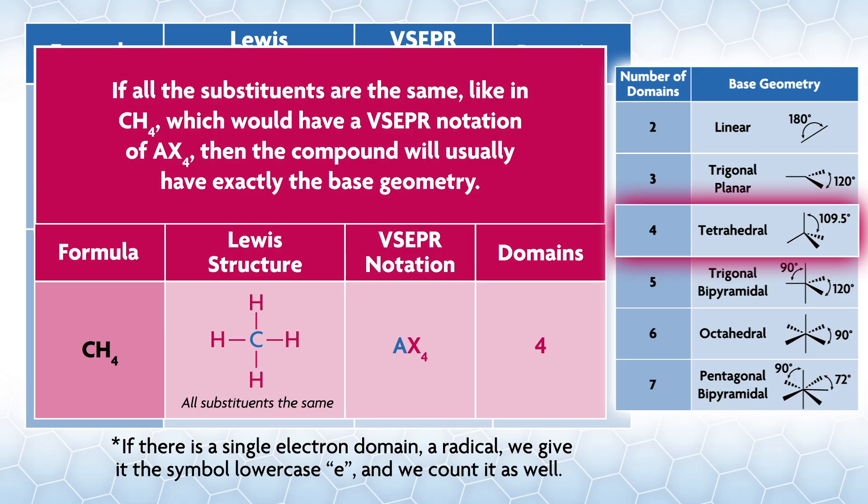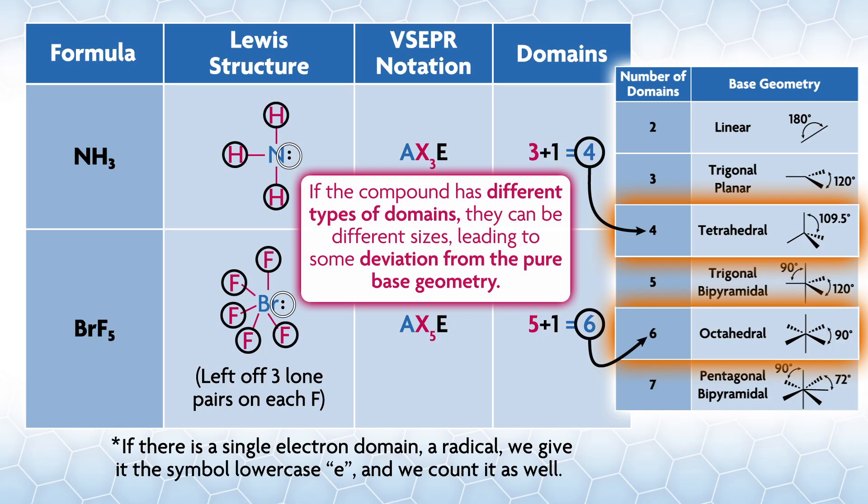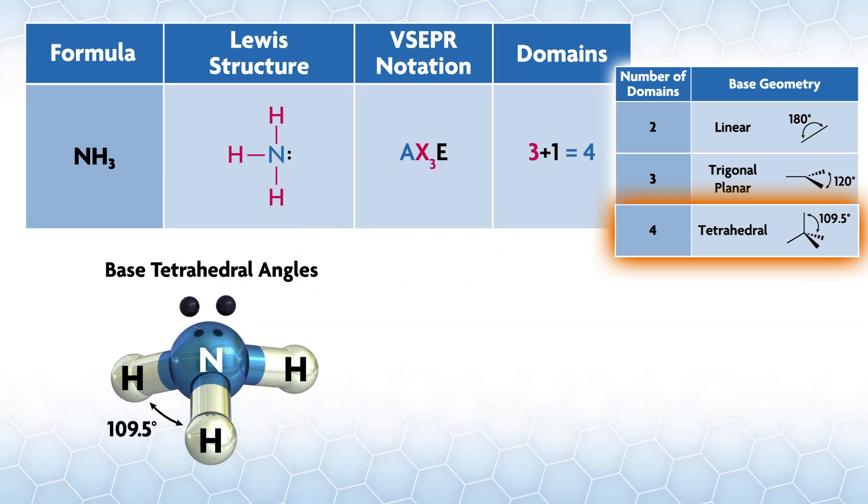Here the base geometries are tabulated for different numbers of domains. If all the substituents are the same, like in CH4, we would have a VSEPR notation of AX4. Then the compound will usually have exactly the base geometry. For AX4 there are four domains - the table says the base geometry is tetrahedral, as is the geometry of methane.